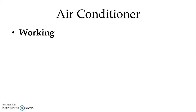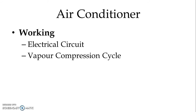Now let us discuss the working of the air conditioner. The working can be divided into three different cycles: first is the electrical circuit, second is the vapor compression cycle, and third is air circulation.